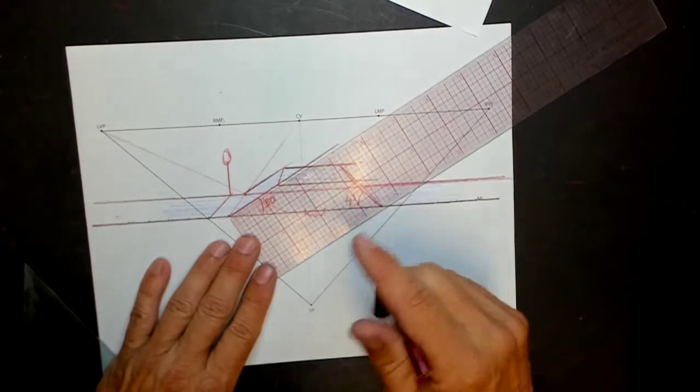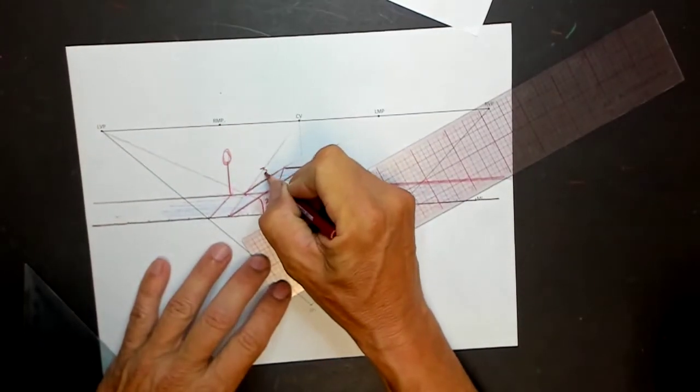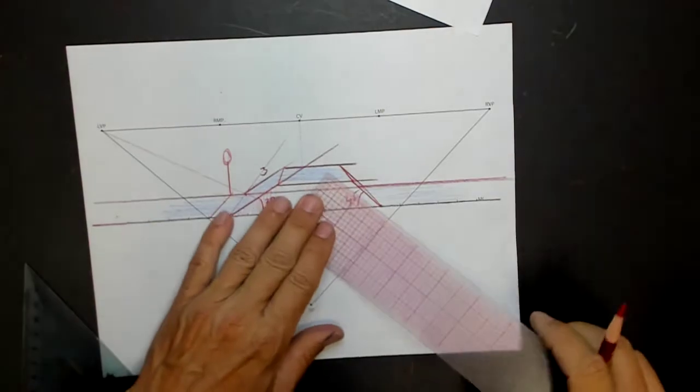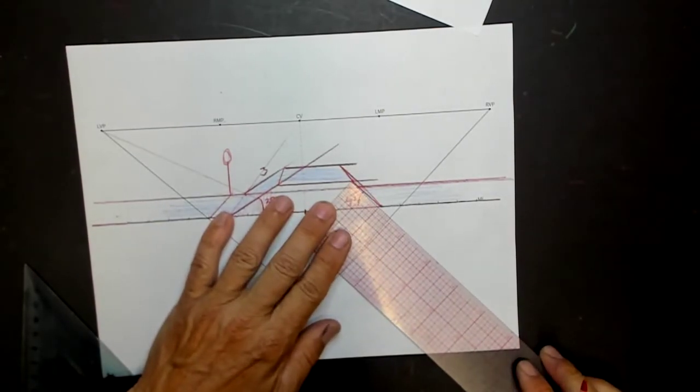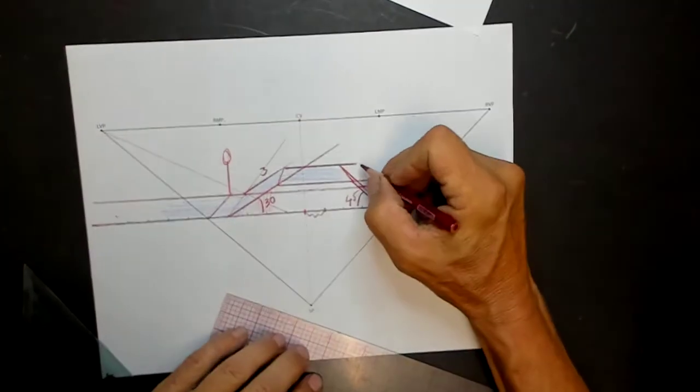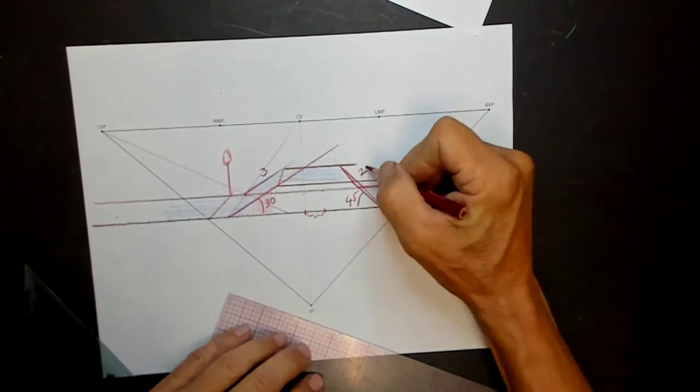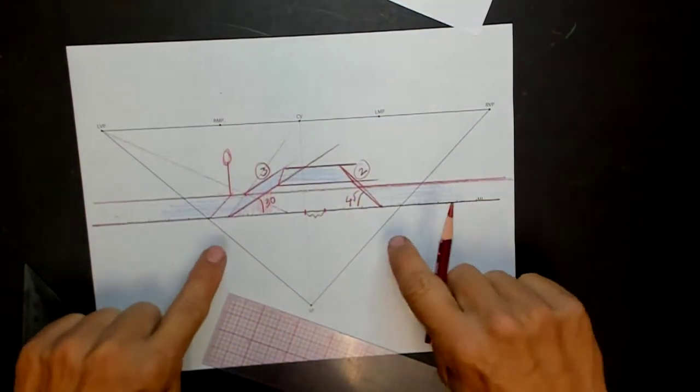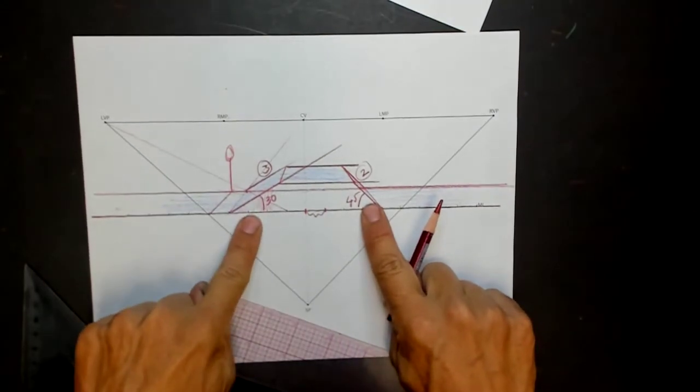So this length is three, and this one is two. This is two and this is three long. And this is 45 degrees and this is 30 degrees.